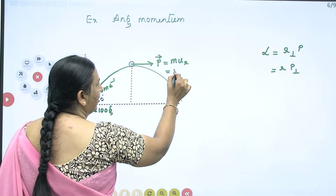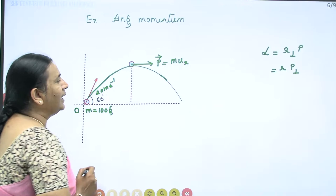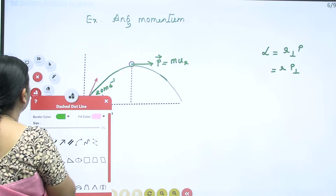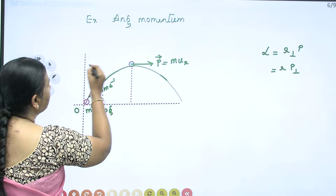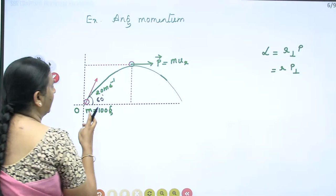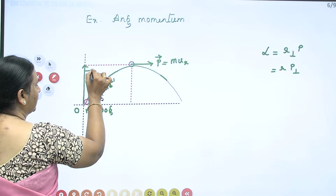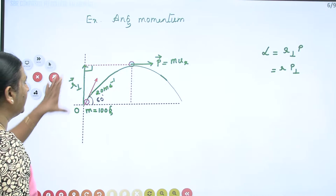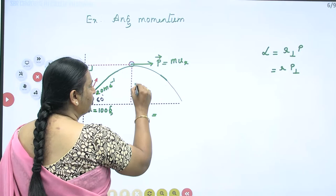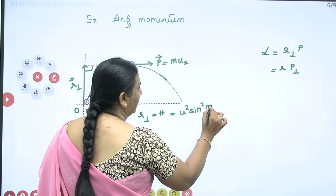We will keep mass as it is for now. The momentum is M × uₓ, and I need to find R_perpendicular for this. If I produce the momentum vector in the backward direction, then from the origin I should find the perpendicular distance to the line of action of momentum. This perpendicular distance is nothing but the maximum height of the projectile, which you can calculate as u² sin²θ / (2g).